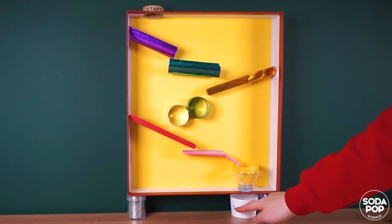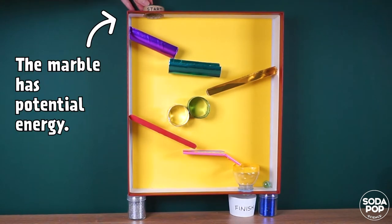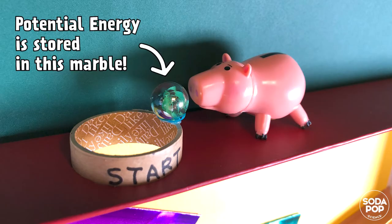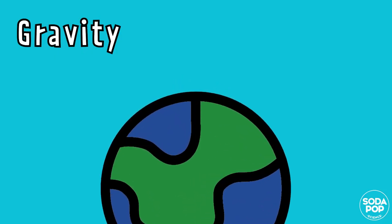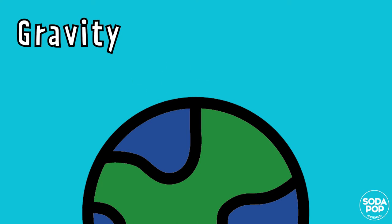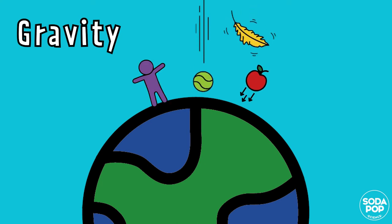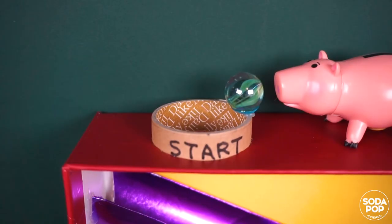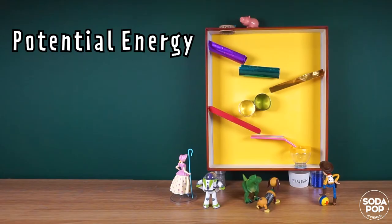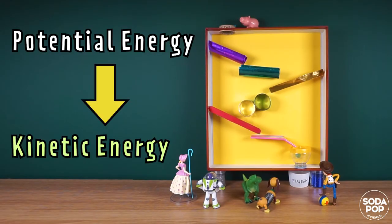At the top of the marble run, the marble has potential energy. This energy is stored up in the marble and ready to be released. Gravity causes the marble to travel down because Earth's gravity pulls things toward the center of the Earth. As the marble rolls down, potential energy turns into kinetic energy. This is how and why a marble run works.